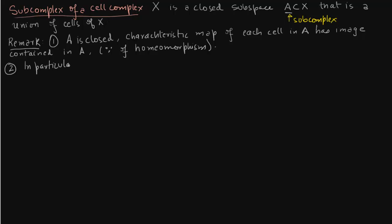Since the characteristic map of each cell in A has image contained in A, we have in particular that the image of the attaching map of each cell in A is contained in A, precisely because of number 1. The characteristic map is a homeomorphism from the interior of the disc to the n-cell, and the attaching map is just part of it.